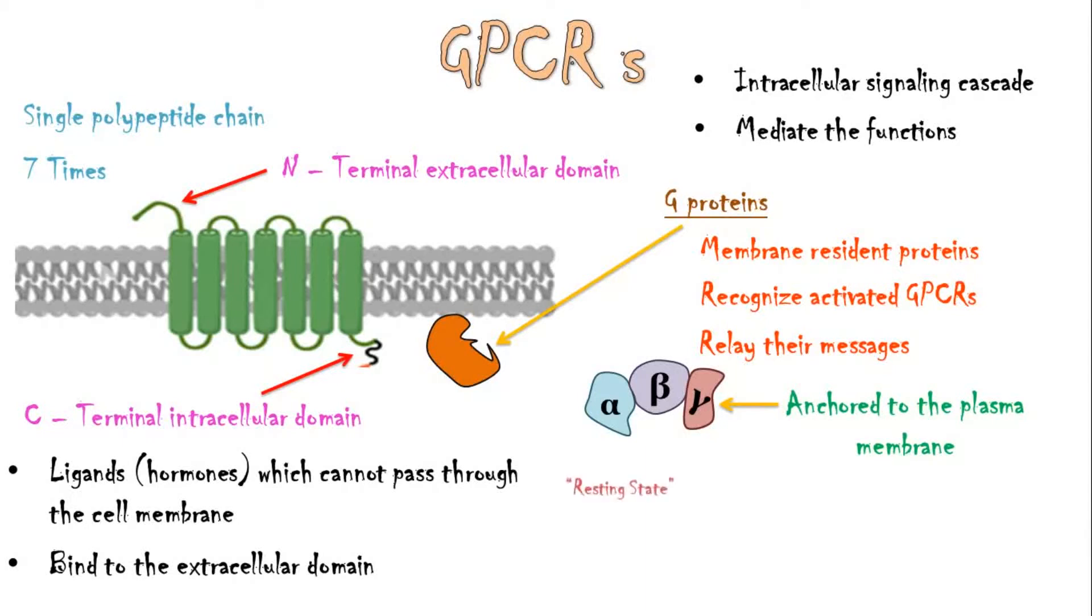In the resting state, G-protein exists as the alpha-beta-gamma trimer, which may or may not be pre-coupled to the receptor. And in the resting state, GDP is bound to the alpha subunit of the G-protein.